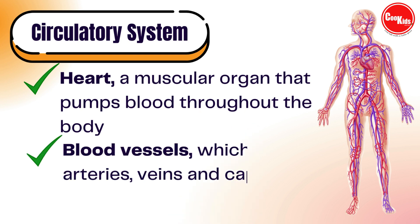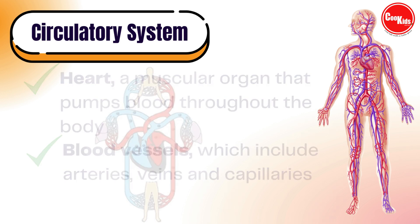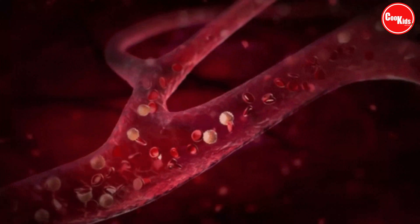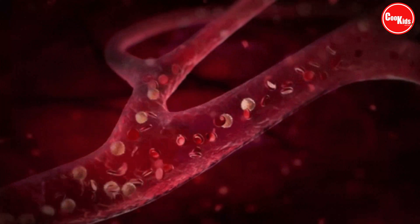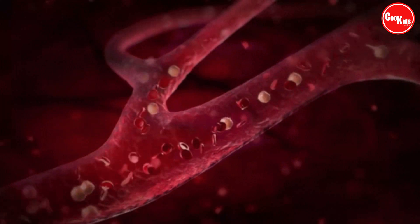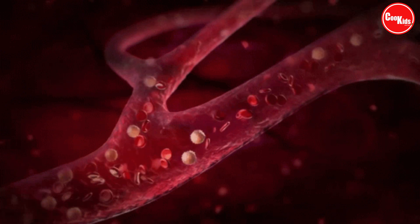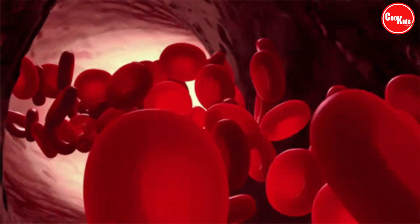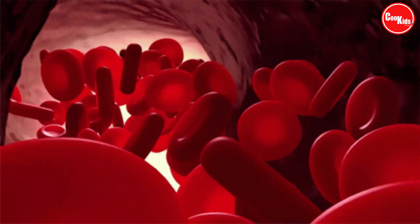The blood vessels are the network of tubes through which blood is pumped around the body. Along with the heart and blood, the blood vessels form the cardiovascular system. The three main types of blood vessels are arteries, veins, and capillaries.